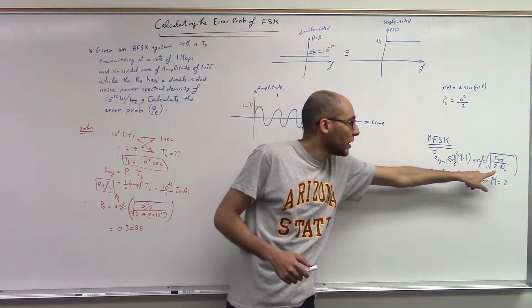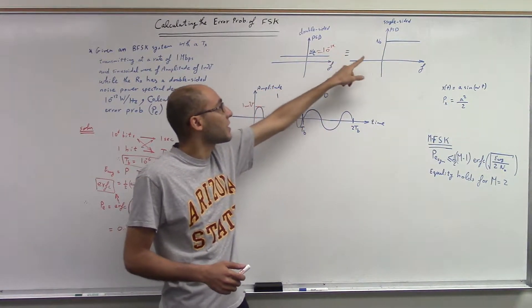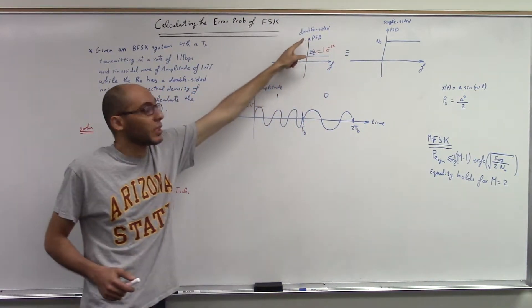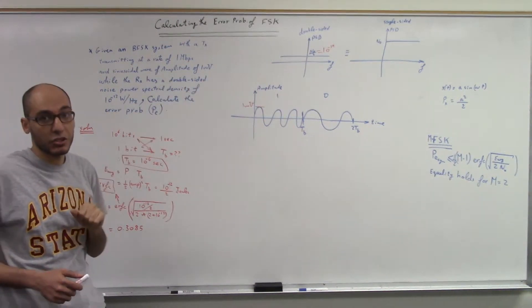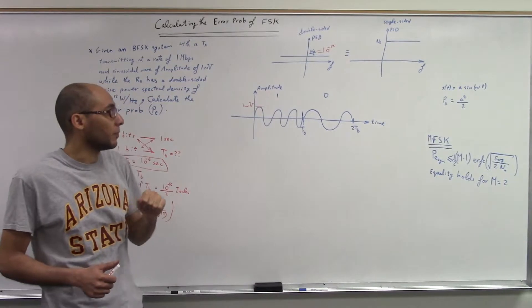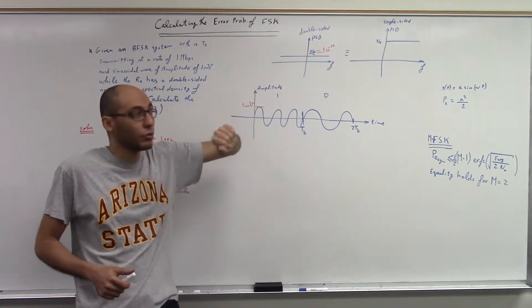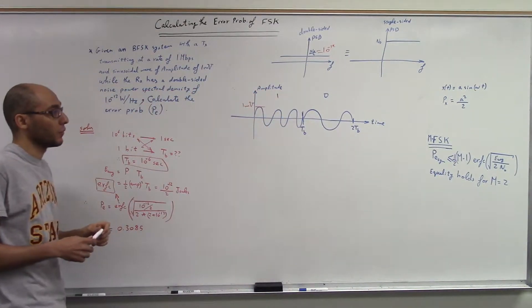And this equation is derived for single-sided. So that's why you need to calculate the single-sided value from the double-sided. Whenever it gives you any value, most likely it is double-sided, even if it is by default, even if it is not mentioned in the problem. So you always need to multiply it by 2 to get the single-sided, and thus be able to substitute in the formula.